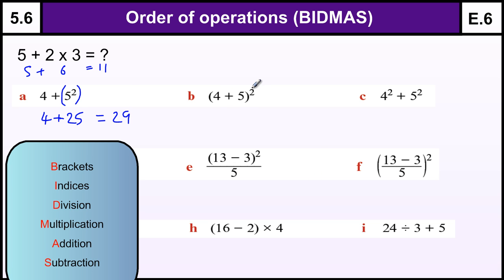This question: we have a bracket and a power. Brackets come first so we must do the bracket first. 5 plus 4 is 9, and then we do the squaring. 9 squared is 9 times 9, which is 81.